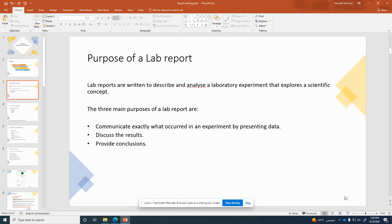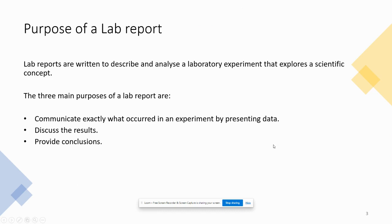First, what is the purpose of a lab report? Lab reports are written to describe and analyze a laboratory experiment that explores a scientific concept. For example, in your lab you might be studying convective heat transfer or the comparison of convective and radiative heat transfer, studying how at certain temperatures radiation heat transfer is more significant compared to convective, and at certain air velocities forced convection becomes more significant than radiation.